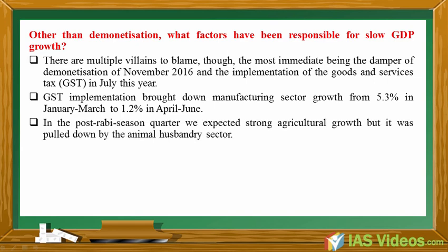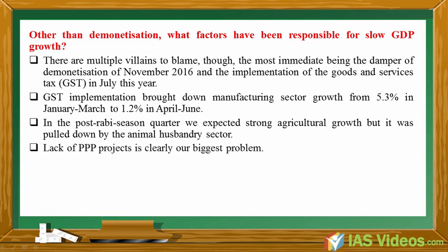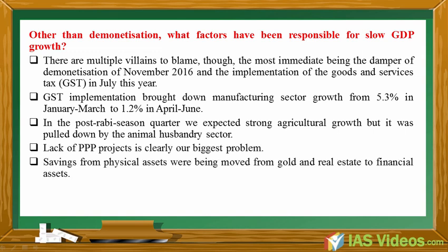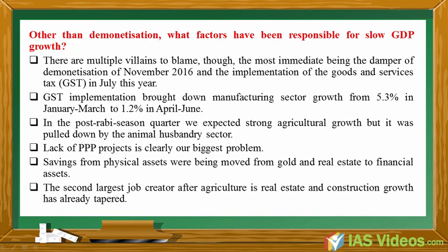In the post-Rabi season quarter, strong agricultural growth was expected but it was pulled down by the animal husbandry sector. Lack of PPP projects is clearly a major problem. Savings from physical assets were being moved from gold and real estate to financial assets. The second largest job creator after agriculture is real estate, and construction growth has already tapered.